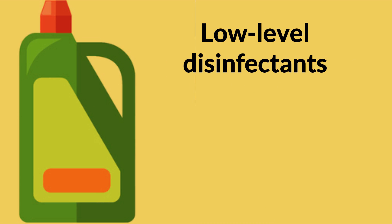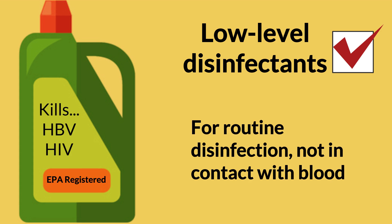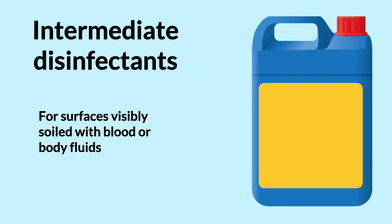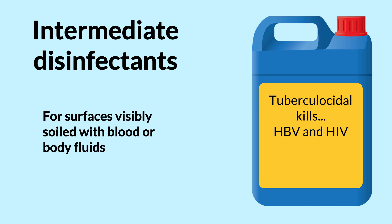When choosing disinfectants for dialysis facilities, low-level disinfectants such as any EPA-registered hospital disinfectant labeled as effective against hepatitis B virus and human immunodeficiency virus are fine to use for routine disinfection of surfaces that have not come in contact with blood. However, intermediate-level disinfectants must be available for disinfection of surfaces visibly soiled with blood or body fluids. Intermediate-level disinfectants will have a tuberculocidal, hepatitis B, and HIV label claim.